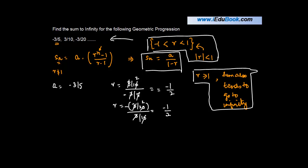So minus 1 upon 2, we know is obviously greater than minus 1. And it is also less than 1. And if you find out the mod of minus 1 upon 2, you get 1 upon 2, which is also less than 1. Hence,